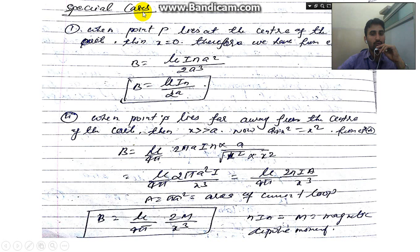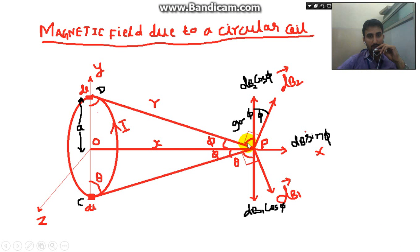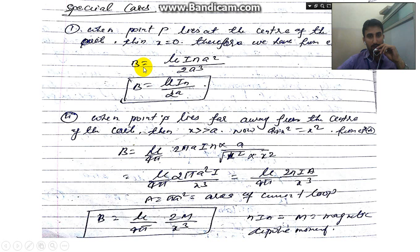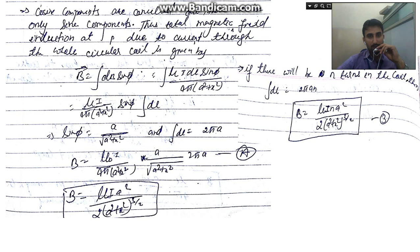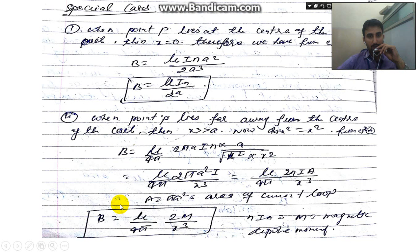Now we consider two special cases. First, when point P lies at the center of the circular coil, X becomes 0. Substituting X = 0 into the formula, a² and a² cancel from numerator and denominator, giving B = μ₀·I·n·a² / (2·a³) = μ₀·I·n / (2a), where n is the number of turns.